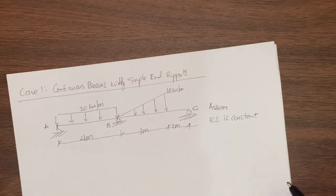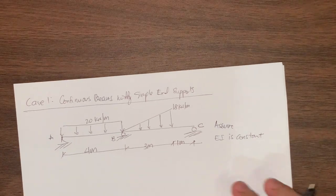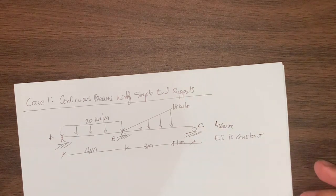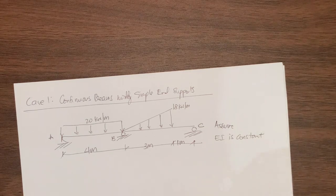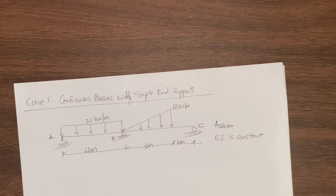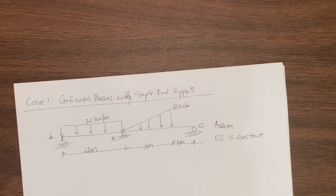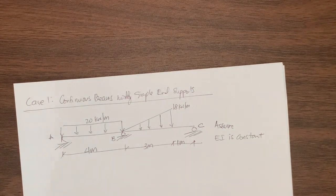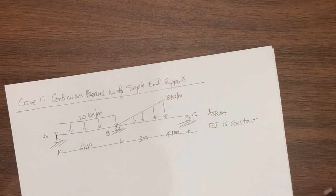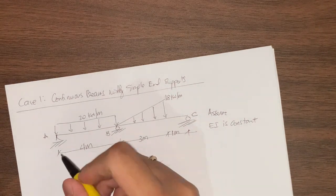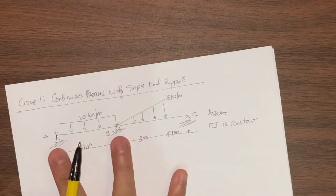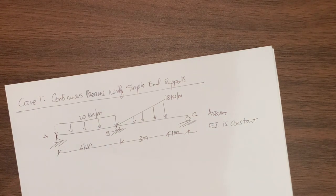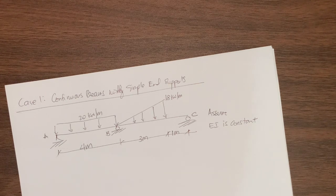Before that, let's write the appropriate three-moment equation for this example. In this example, we are given two spans, span AB and BC, with a uniform load of 20 kN per meter on the first span. On the second span, we have a uniformly increasing load of 18 kN per meter starting from point B and ending 1 meter before support C. Let's write first the three-moment equation that we have derived last time. The three-moment equation is applicable here since we have three points: A, B, and C.